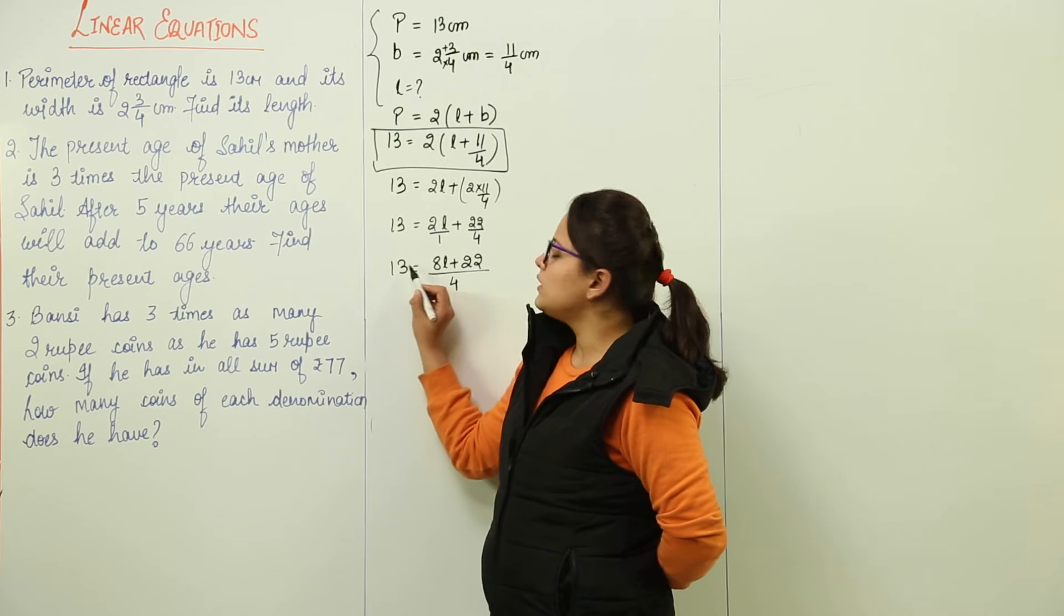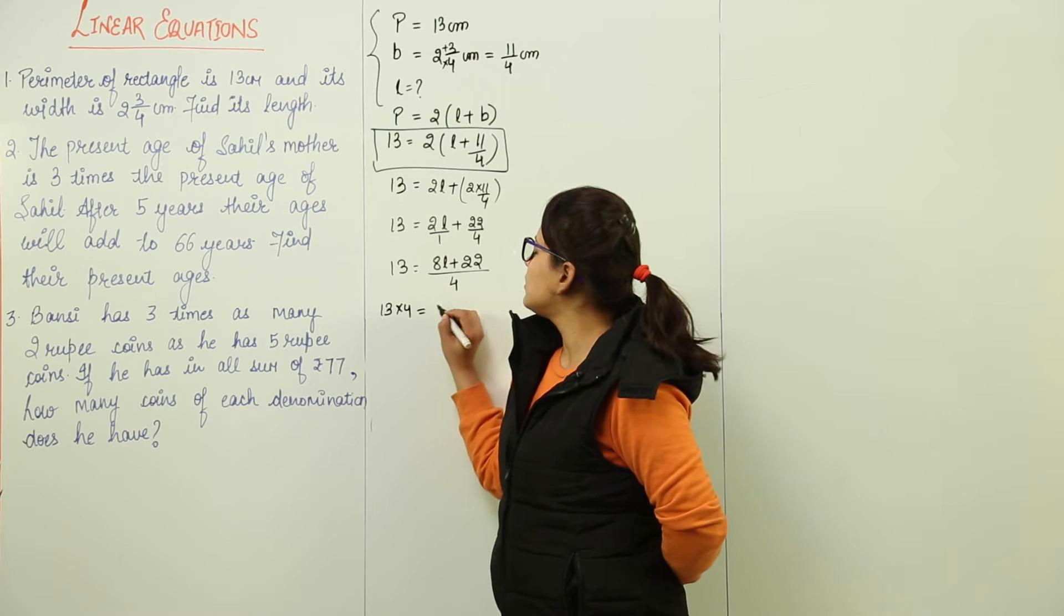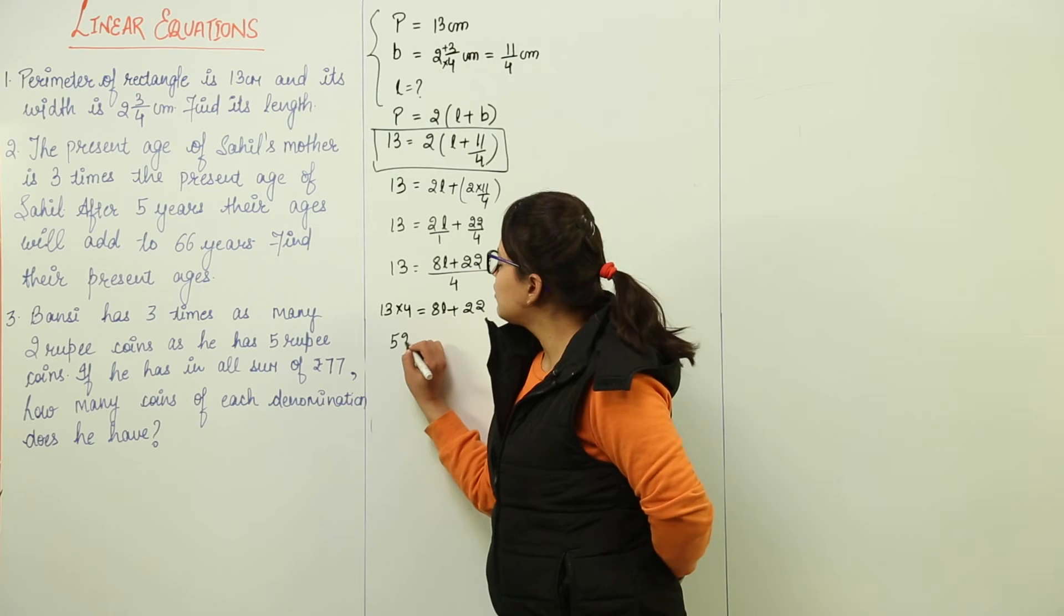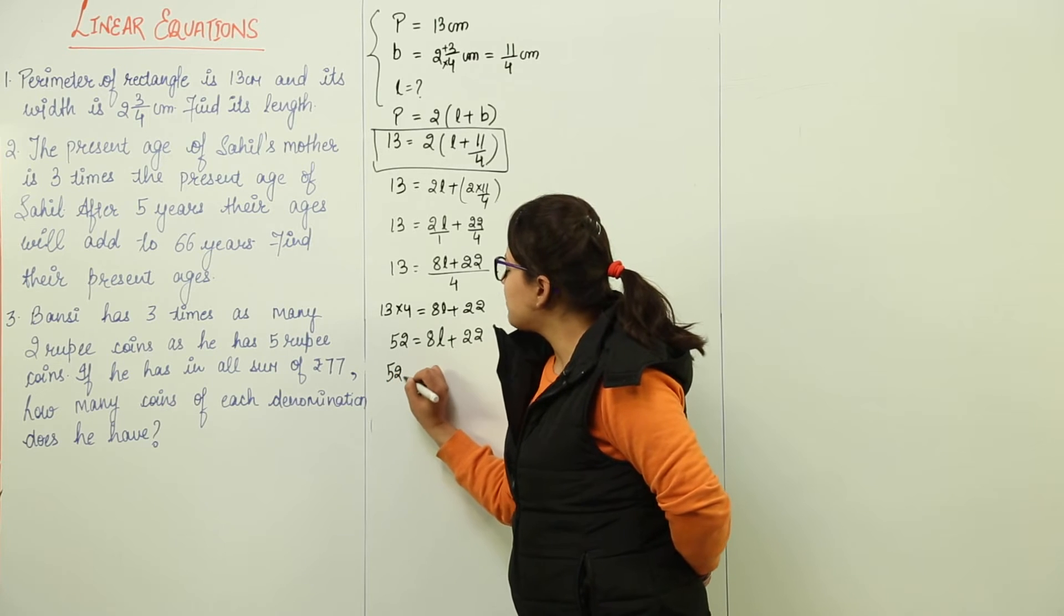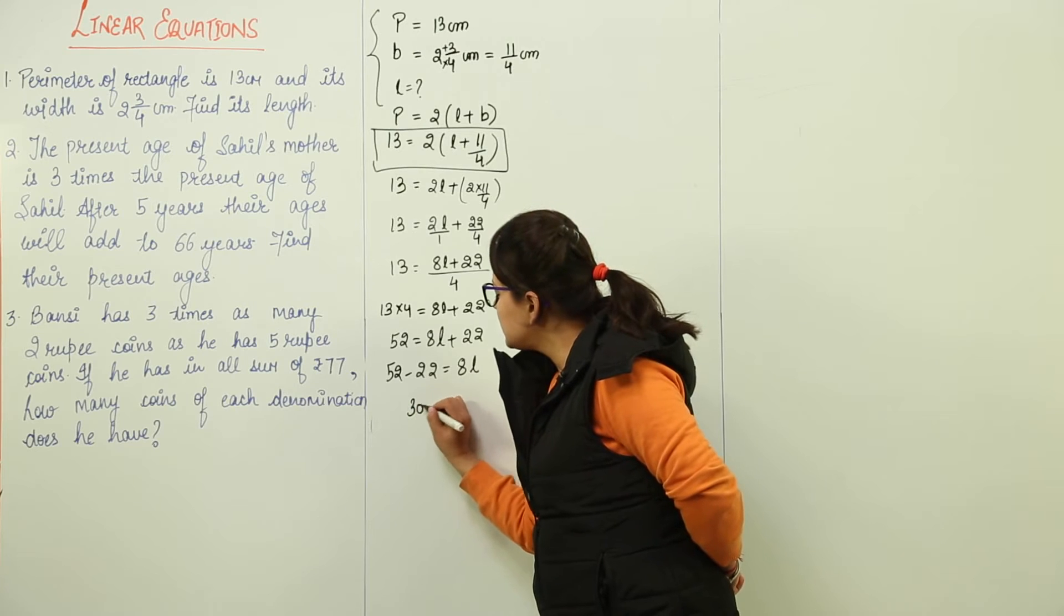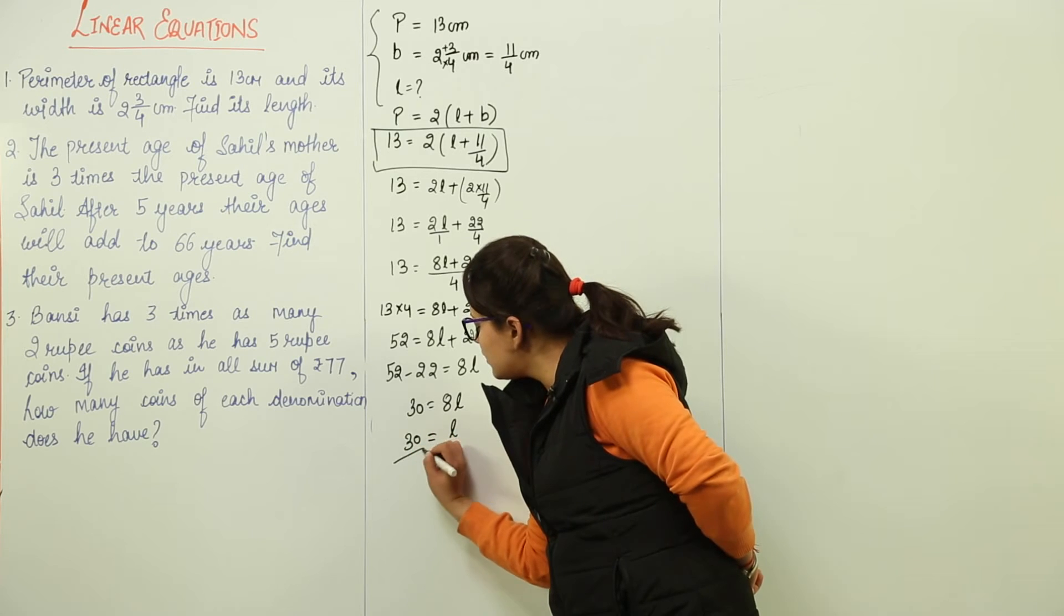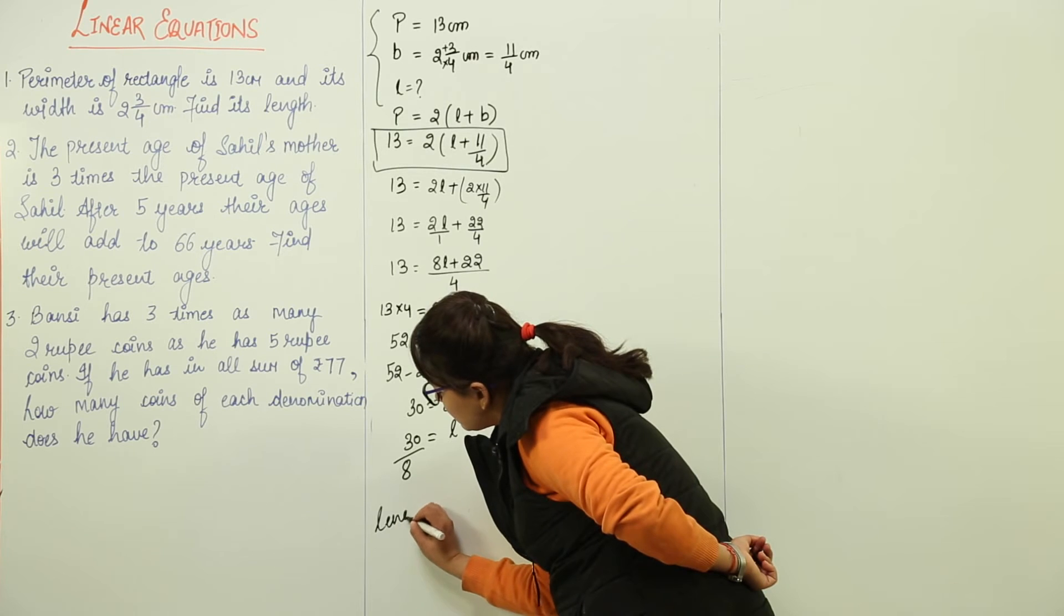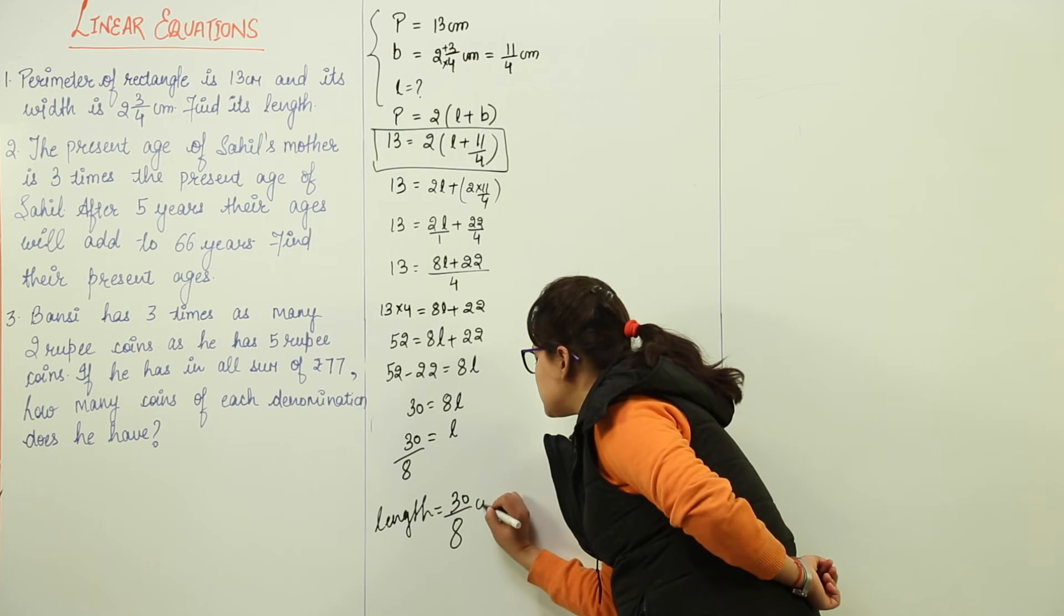We need to take 4 to the other side. So it will get multiply, 13 into 4 is equal to 8L plus 22. What is 13 into 4? 52 equals 8L plus 22. Now 52 minus 22 is equal to 8L, 30 is equal to 8L, and L solves to be 30 over 8. So the length of the rectangle comes out to be 30 upon 8 centimeters.